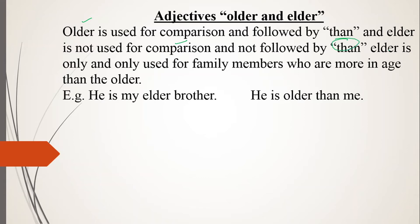Elder is only and only used for family members — for those in your family who are greater in age. For example, we say 'he is my elder brother,' but if we compare ages, we say 'he is older than me,' not 'he is elder than me.'